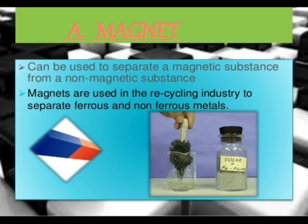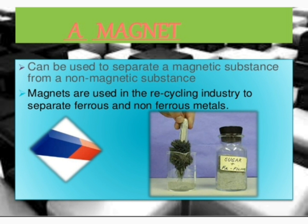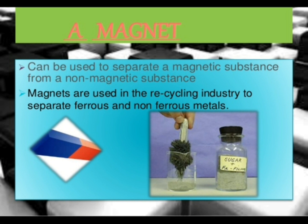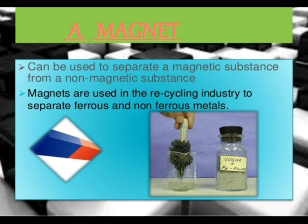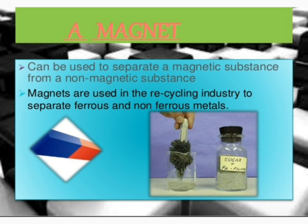The third method is separation by magnet. Iron is attracted by a magnet, and this property is used to separate it from a mixture. For example, in a mixture of iron filings and sulfur powder, a horseshoe-type magnet is moved over the surface of the mixture. Iron filings get attracted and cling to the poles of the magnet, while sulfur is not attracted and remains behind.